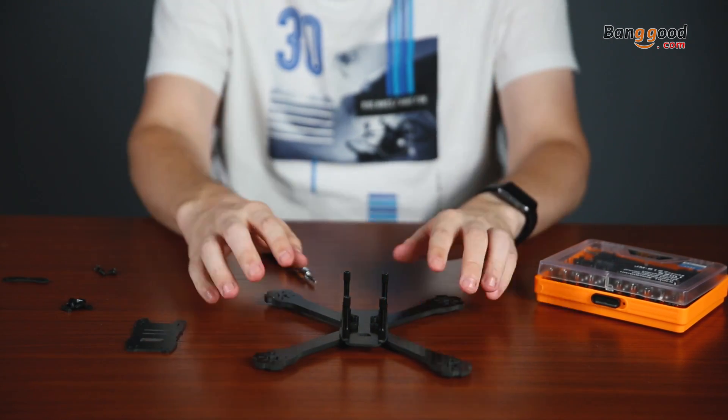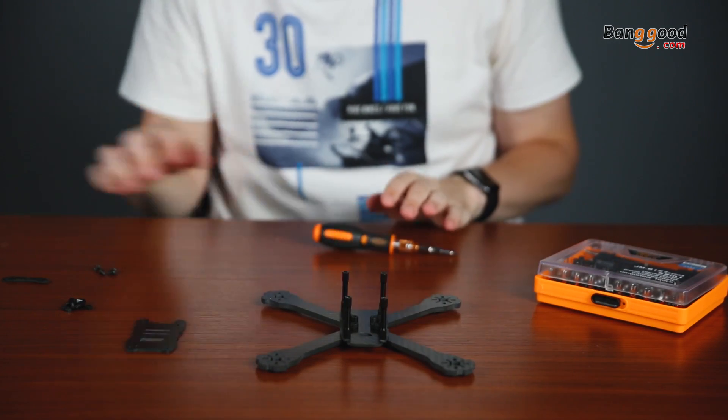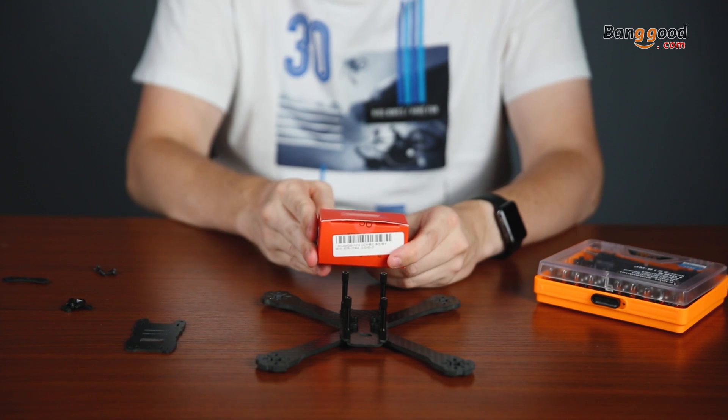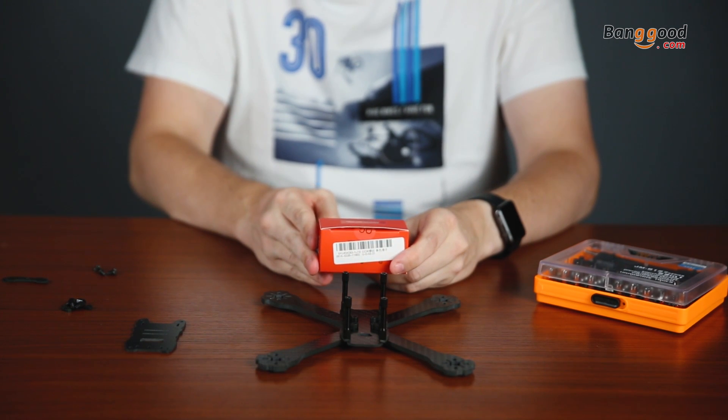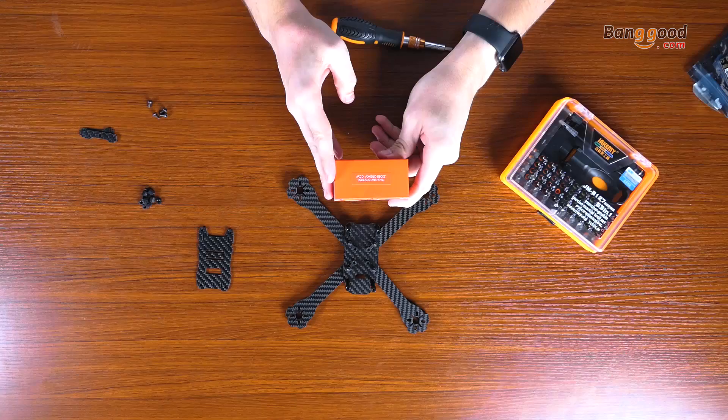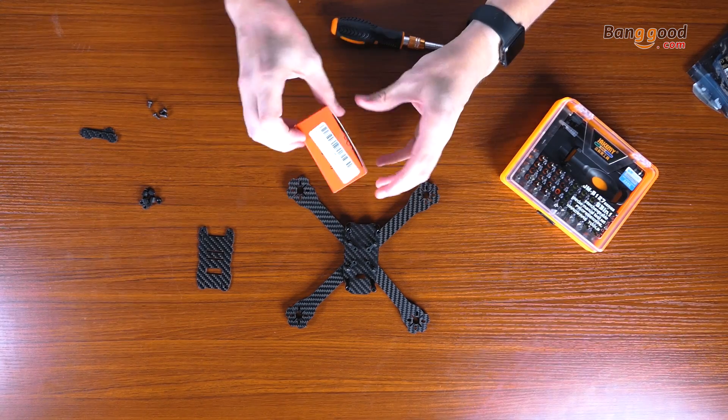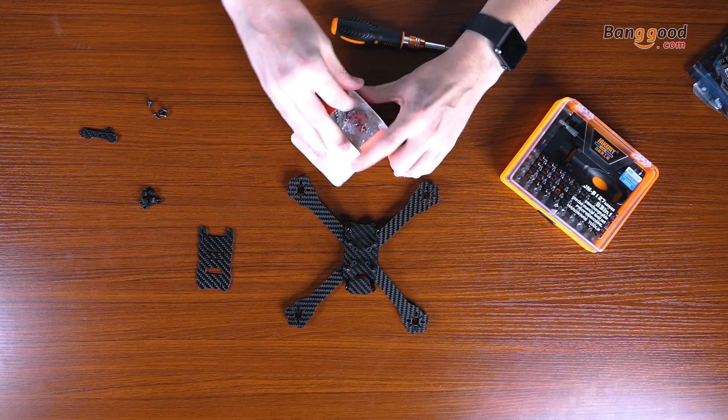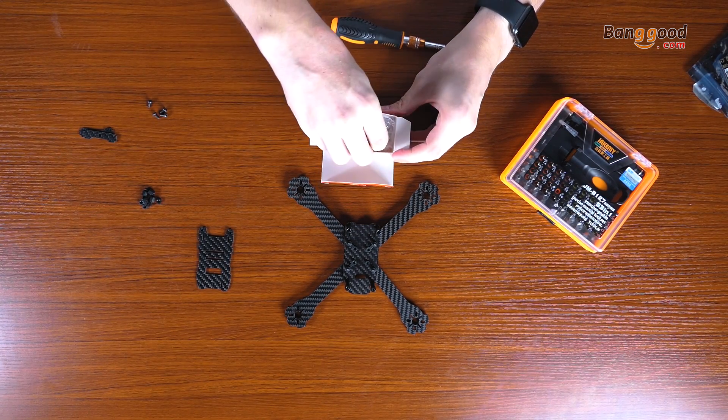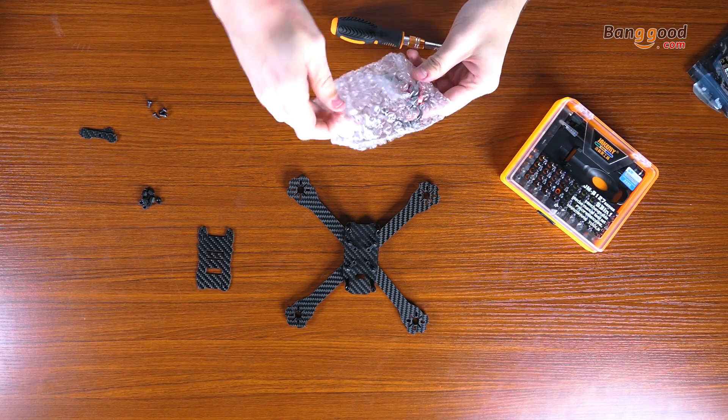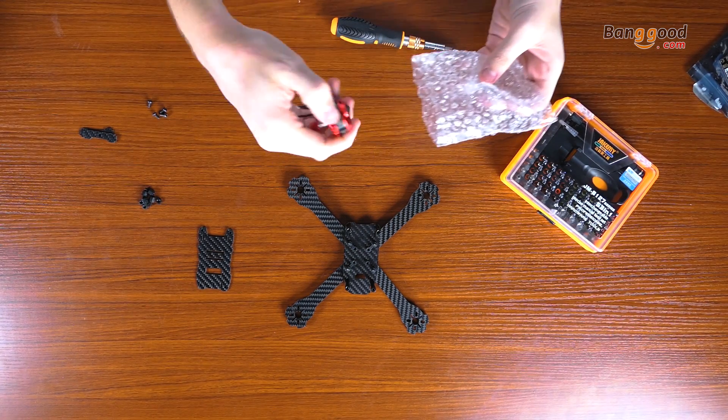For this build we have these motors - very nice Racestar PR2306S motors which are very strong. Let's open them and see what we can find inside. We have four of them here.